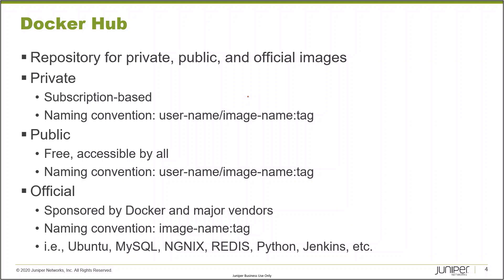Docker Hub has three types of repositories: public, private, and official. If you want a private repository, that does require a subscription. Anyone can create and use a free public repository, much like GitHub — the catch is that everyone can see and use your containers. If your container needs to remain private, you'll want to pay for a subscription; otherwise, let the world use it. There are also official repositories, which are sponsored by Docker or other major vendors. One we're going to use in this example will be the Python official image — its naming convention does not include an account name, just the image name followed by a version tag.